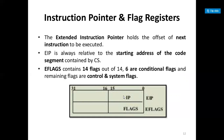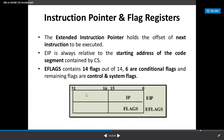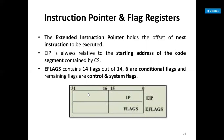The flag register is 32-bit. The 16-bit IP is extended to a 32-bit EIP, the extended instruction pointer, which holds the offset of the next instruction to be executed. EIP always refers to the starting address of the code segment. The extended flags register contains 14 flags; 6 are conditional flags and the remaining are control and system status flags.